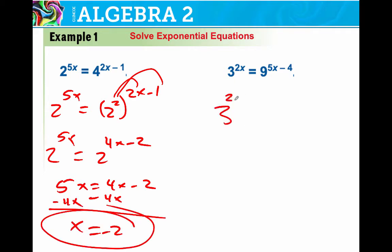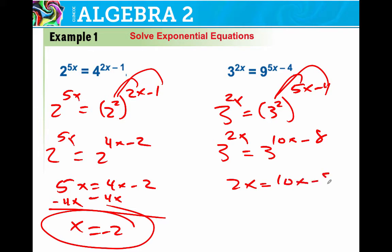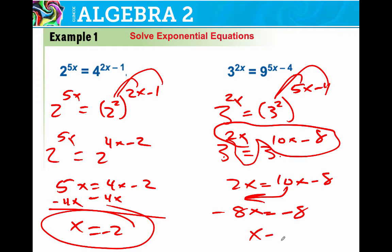Over here, again, I've got 9. So that's 3 squared to the 5x minus 4. Again, distribute. 3 to the 2x equals 3 to the 10x minus 8. 2x equals 10x minus 8. So once you get the bases to be the same, drop them and go with it. Move this over. Negative 8x is negative 8. x is 1.